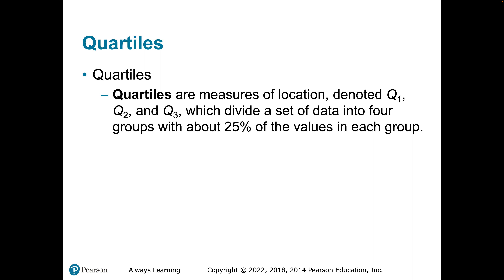A quartile is a measure of location, and we have three quartiles: quartile one, quartile two, and quartile three. The way I like to think about quartiles is if you had a string and you wanted to cut the string into four equal pieces, how many cuts would you have to make? Well, you'd have to make three cuts — a cut in the center, a cut on the bottom piece, and a cut on the other piece.